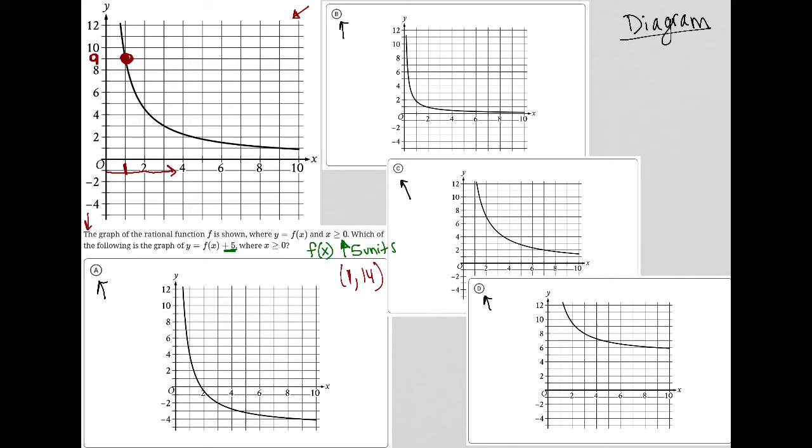Because the x value is not changing, I'm not shifting left or right. But the y value is changing. I'm going from a positive 9 in the original function up 5 units to a 14. So I'm going to just start with that. Is there an answer choice that has 1 comma 14?